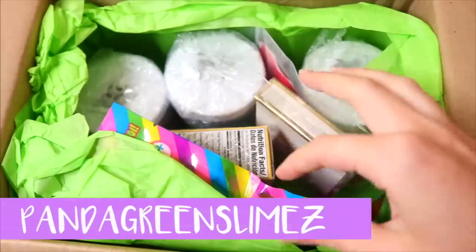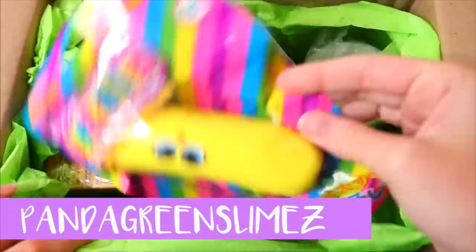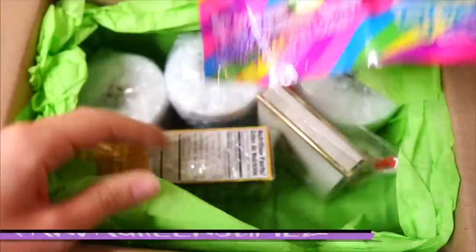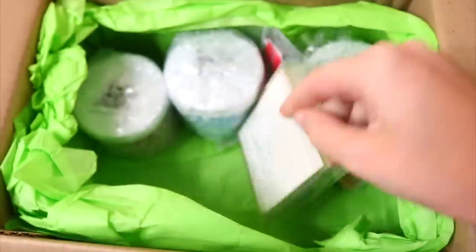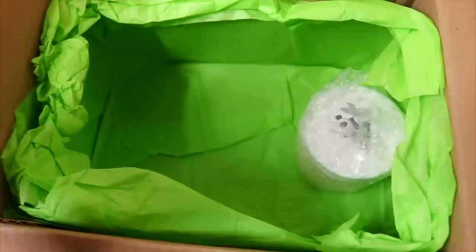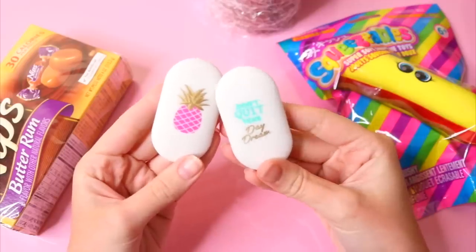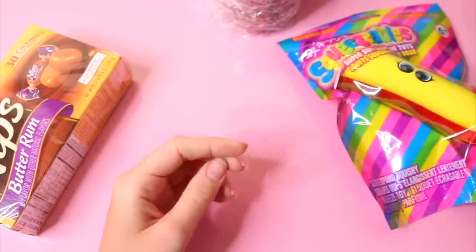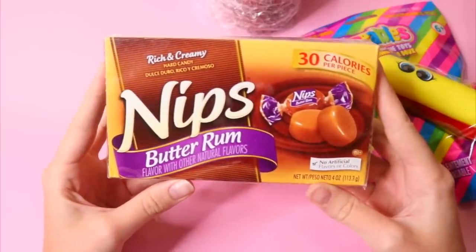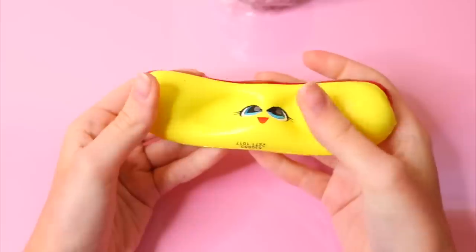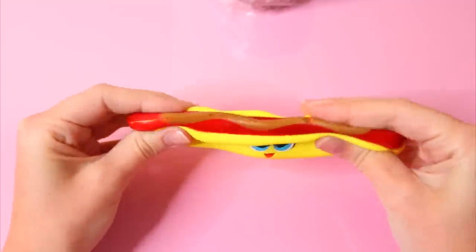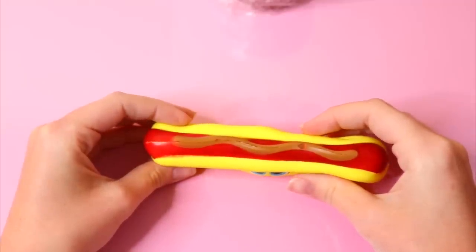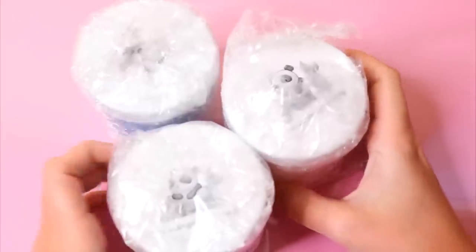The very first slime package is from Panda Green Slimes and there were so many awesome goodies in this. I can't wait to show you guys everything. I was literally so excited and it came packaged so nicely, so professionally. I loved it. So we have first up these two erasers. These are like the cutest erasers ever. I use erasers all the time, so these are going to be on my desk, my new favorite. And also some candy and this super slow-rising squishy hot dog. I absolutely loved these extras. Thank you so much. They were so awesome. And then of course, we have three slimes here.